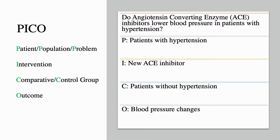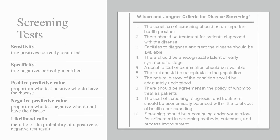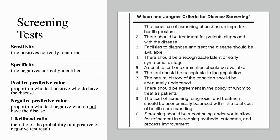Screening tests under the Wilson and Jungner criteria. Sensitivity: the true positives correctly identified. Specificity: the true negatives correctly identified. Positive predictive value: the proportion who test positive who do have the disease. Negative predictive value: the proportion who test negative who do not have the disease. Likelihood ratio: the ratio of the probability of a positive or negative test result.